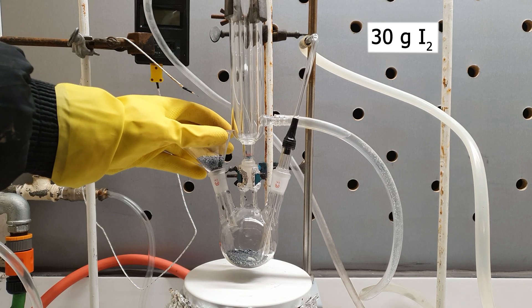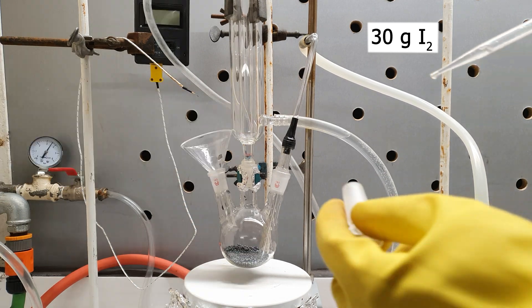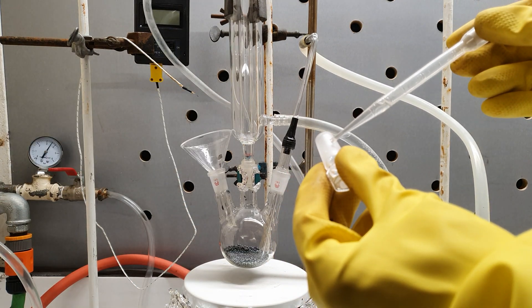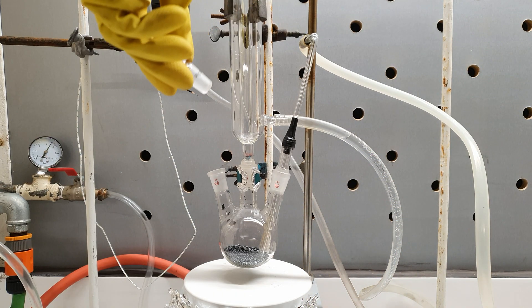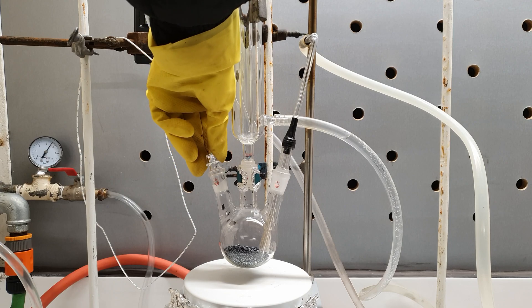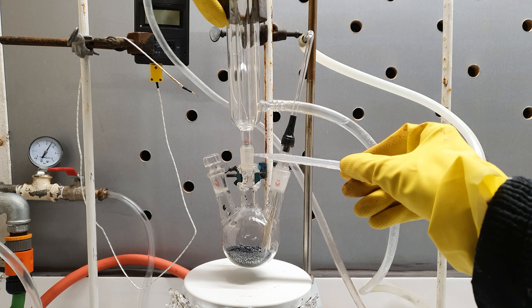I start off by charging the reaction flask with 30 grams of iodine. Then I lubricated the glass joints with some concentrated sulfuric acid. As I said earlier, iodine monochloride acts a lot like bromine, so it will manage to escape even through the tiniest cracks.